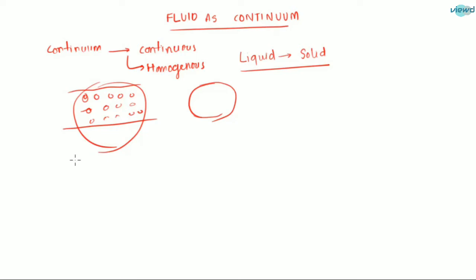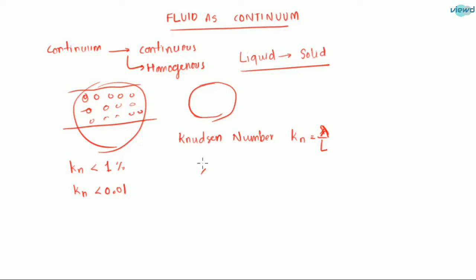In order for this fluid to be considered continuous, our assumption is that the fluid has a Knudsen number less than 0.01. In terms of percentage, that is less than 1%. The Knudsen number is equal to lambda divided by L, where lambda is the mean free path and L is the characteristic length.